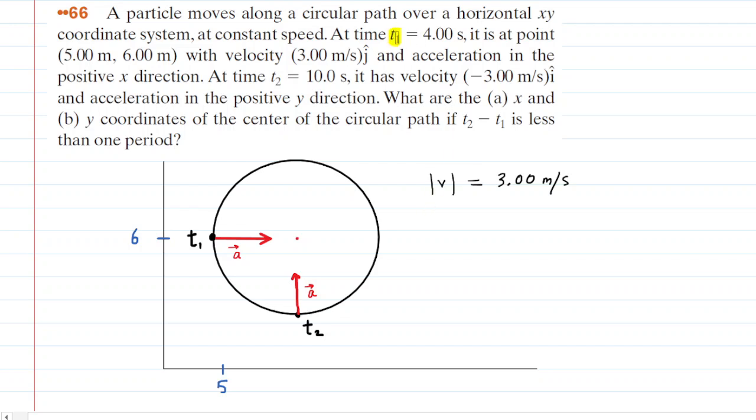For instance, at a time of t1, 4 seconds, we have the particle's coordinates 5, 6, so we've labeled the x-coordinate at this time t1 with 5, and then the y-coordinate with 6.